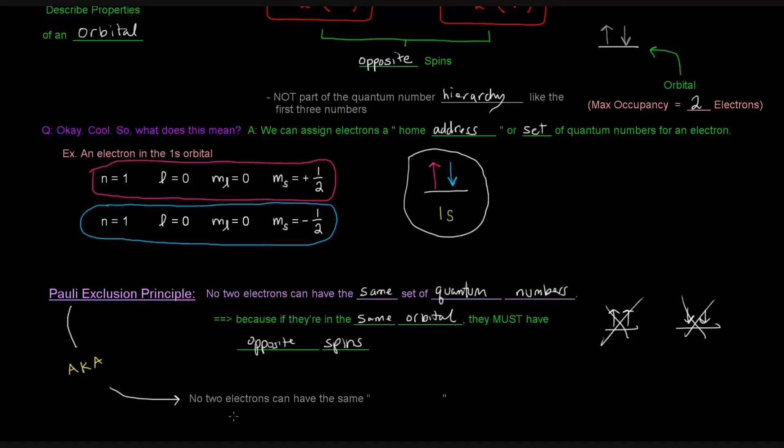Basically, no two electrons can have the same address. They both can't live in the same home. Kind of, if you think about it like that. So that's the Pauli exclusion principle, and how it relates to the fourth quantum number, electron spin.